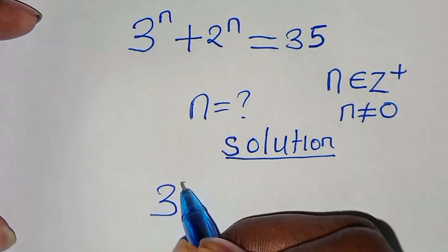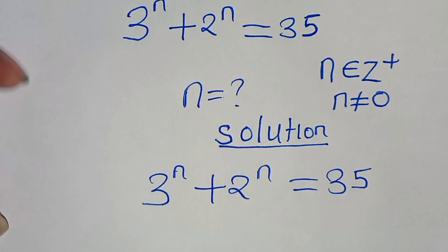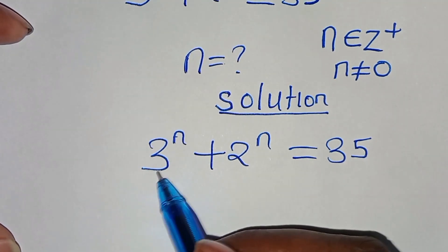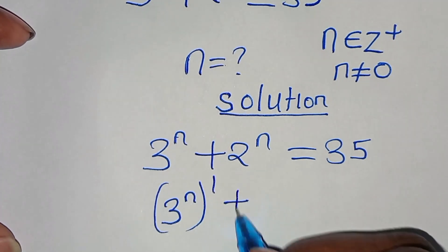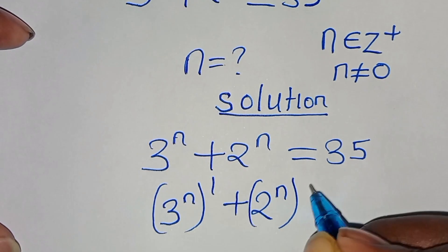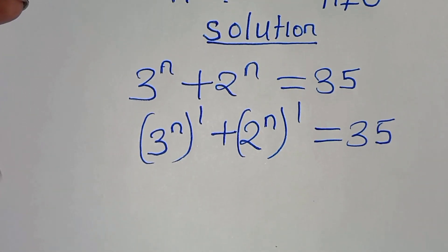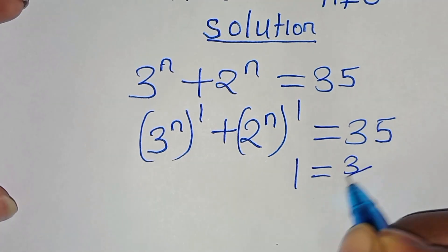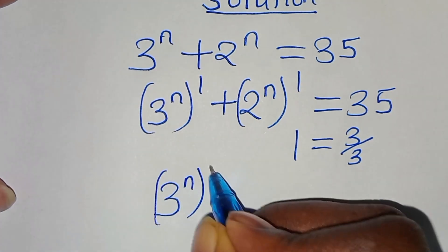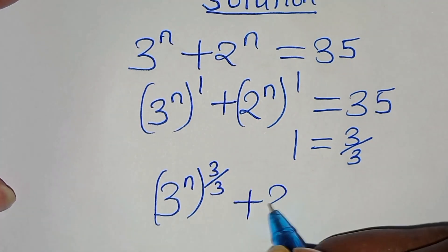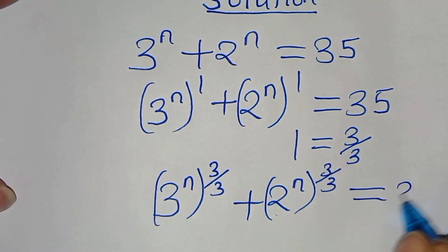So we have 3 to the power of n plus 2 to the power of n, this is equal to 35. We can express 3 to the power of n as 3 to the power of n raised to the power of 1, then plus 2 to the power of n raised to the power of 1, this is equal to 35. Now, 1 can be expressed as 3 over 3, and this implies that we have 3 to the power of n raised to the power of 3 over 3, then plus 2 to the power of n raised to the power of 3 over 3, this is equal to 35.